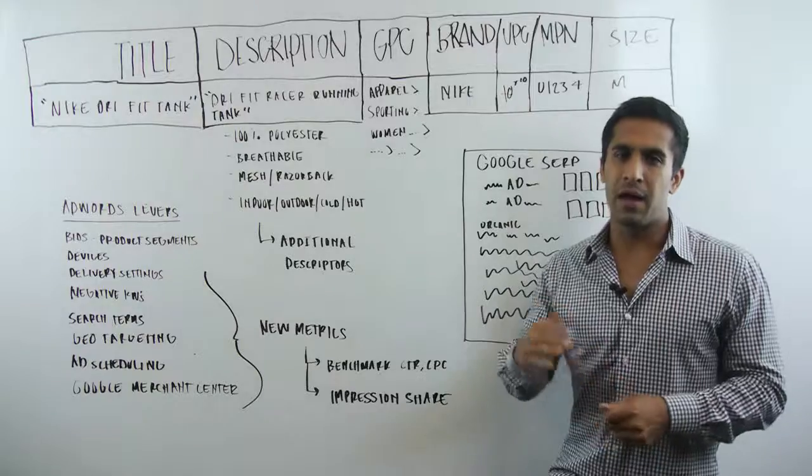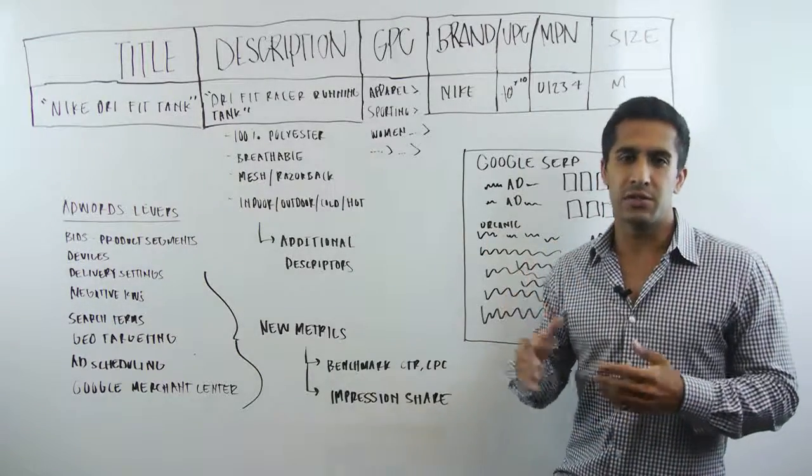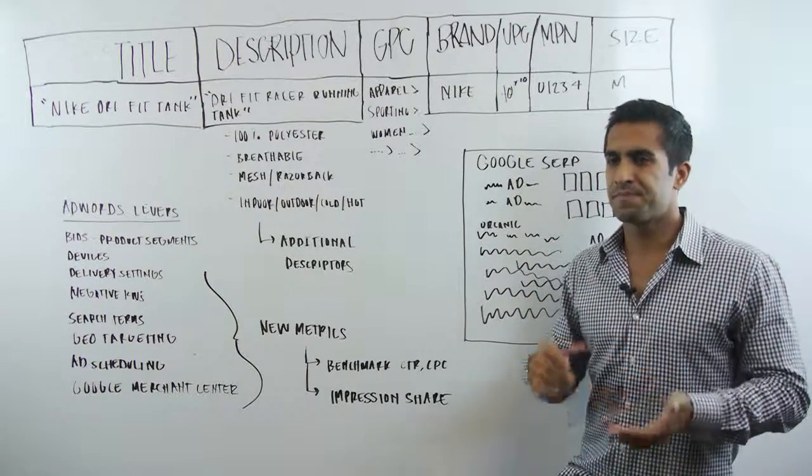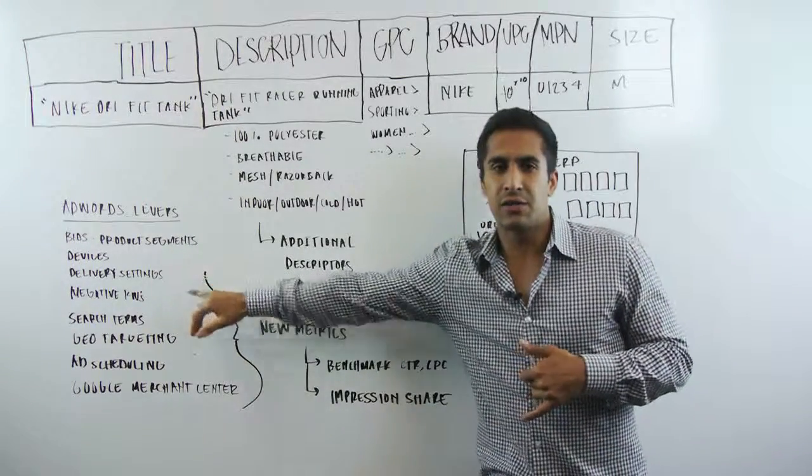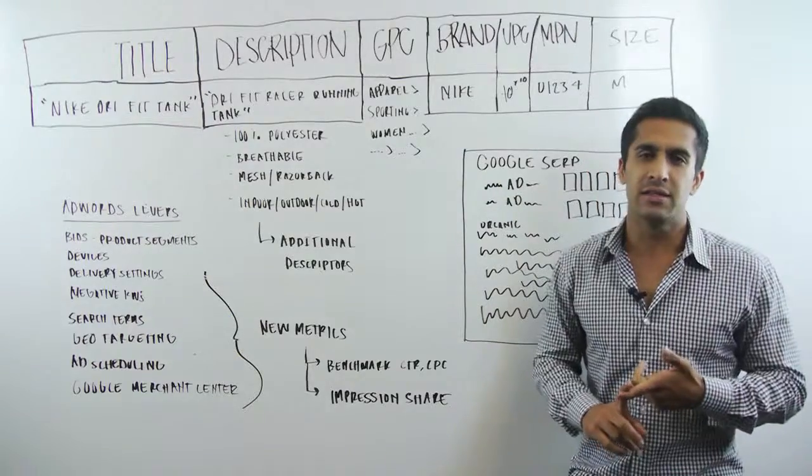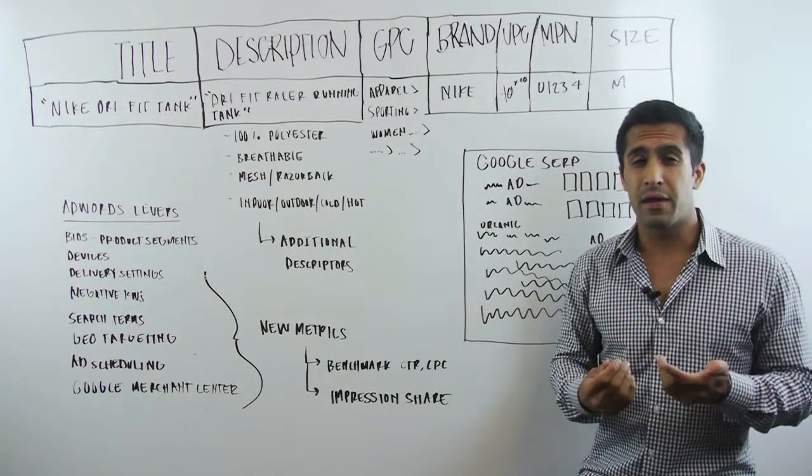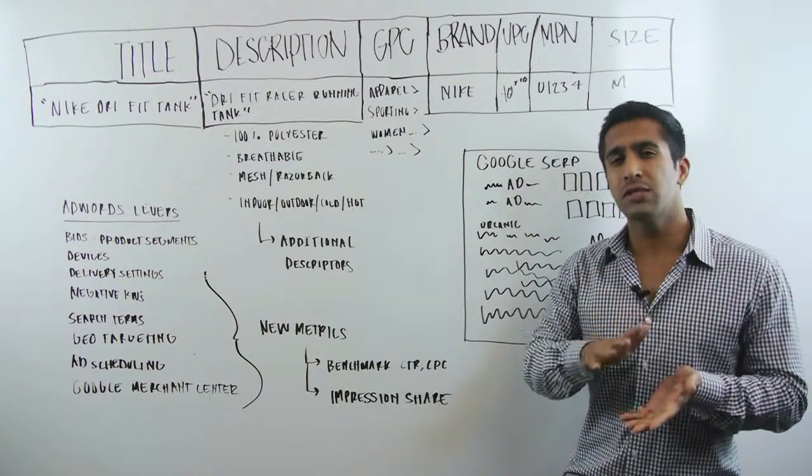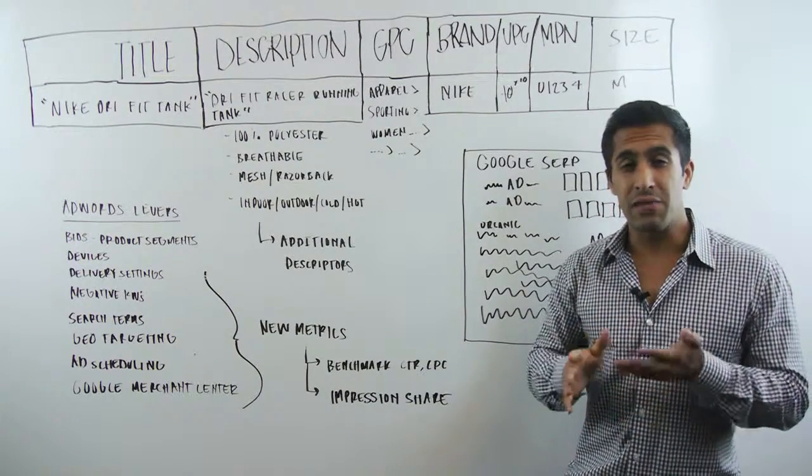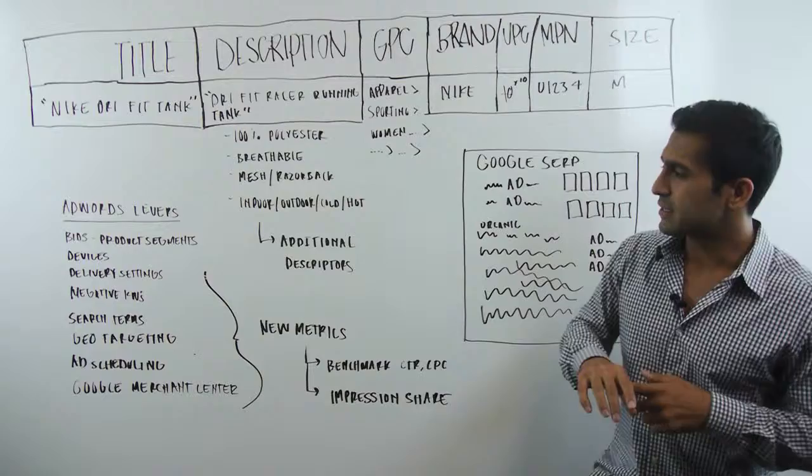We've got devices. So you can apply percentage increases or decreases on mobile devices, which, you know, there's a lot of mobile traffic. Does it convert? That's another question. We've got your delivery settings. You're going to want to make sure that you're serving your ads one after the other. Google defaults to a standard setting that forces you to deliver them evenly over time. I would want to accelerate those.